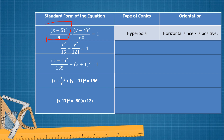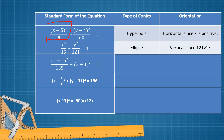For the second example, there are also fractions involved, so we're going to choose between an ellipse and hyperbola. But since the two terms are separated by a plus sign, the type of conics is an ellipse and the orientation is vertical. Why? Because the greater denominator is below y squared. If it is below x squared, the orientation is horizontal.